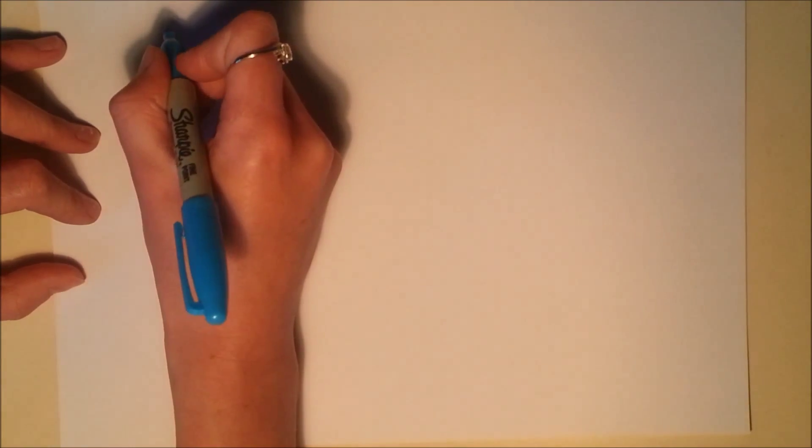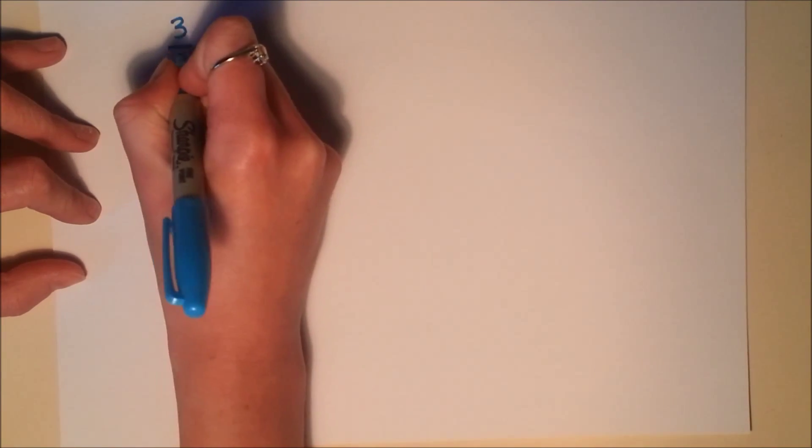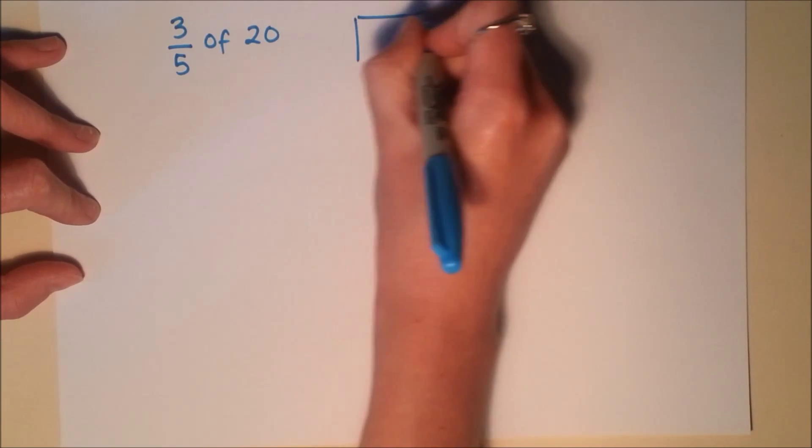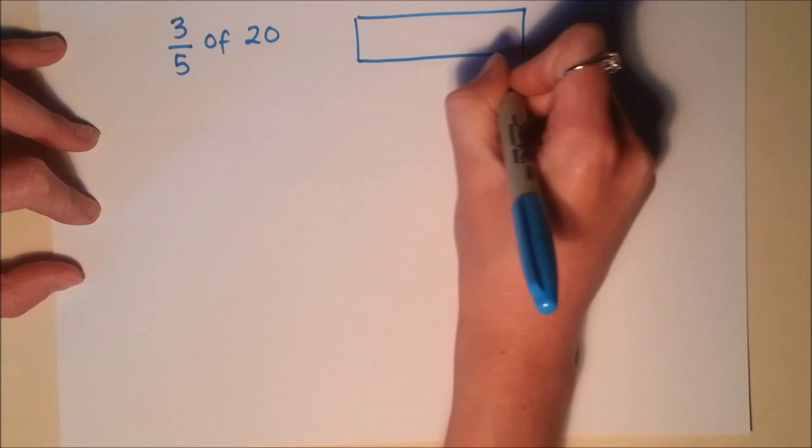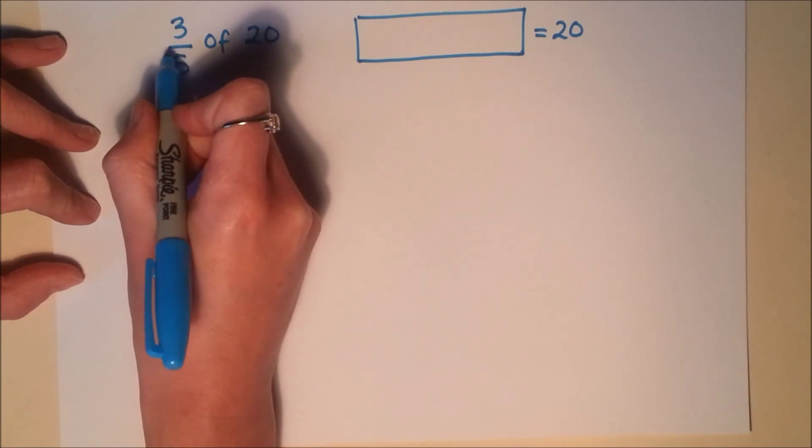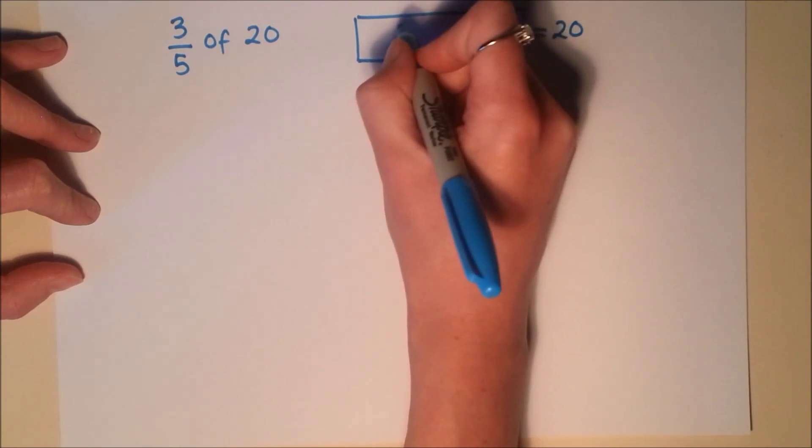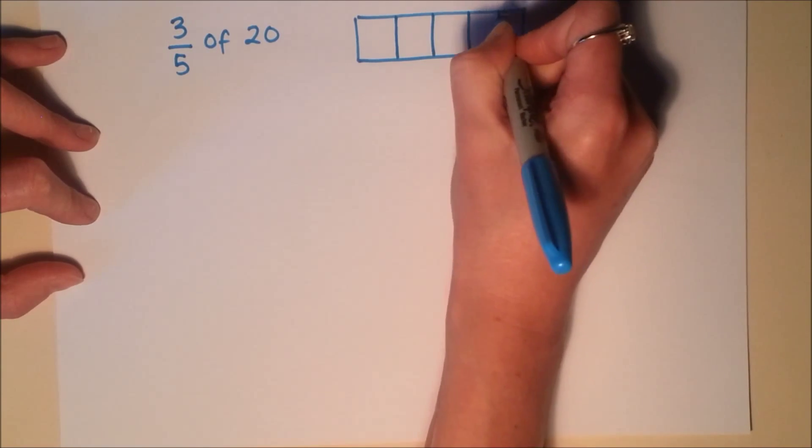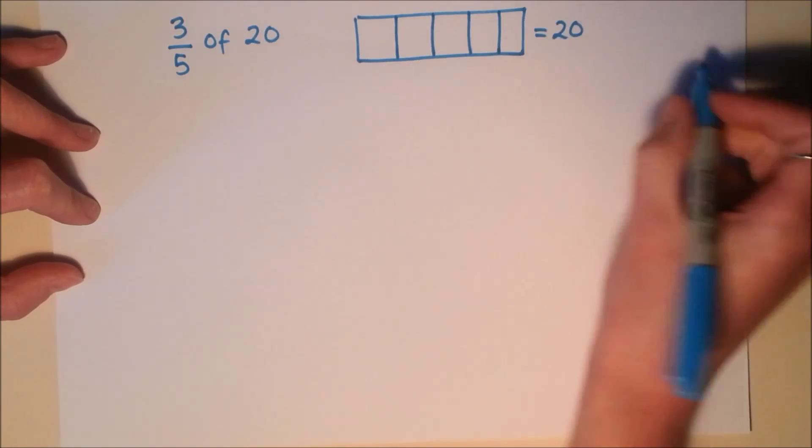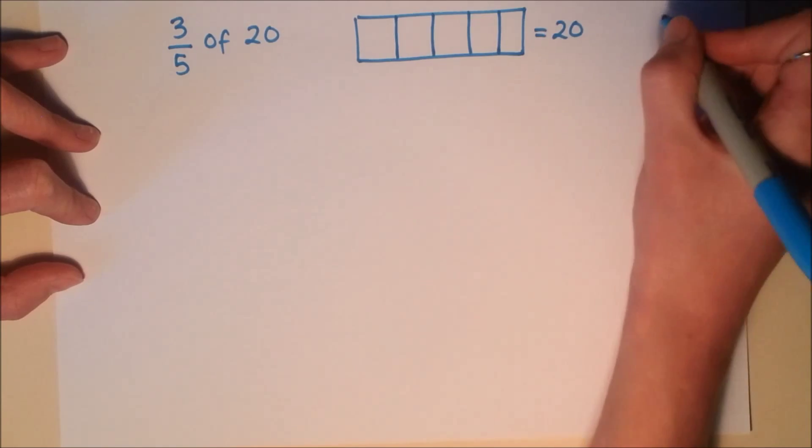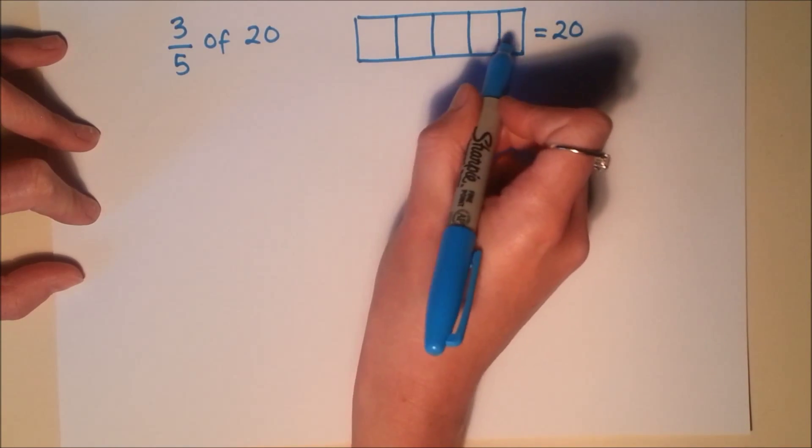So let's have a look at something like 3 fifths of 20. I'm going to draw a rectangle to represent my full amount. That full amount is worth 20. The denominator is 5, so I'm going to split into 5 equal pieces as best as I can. They look about equal, I think.